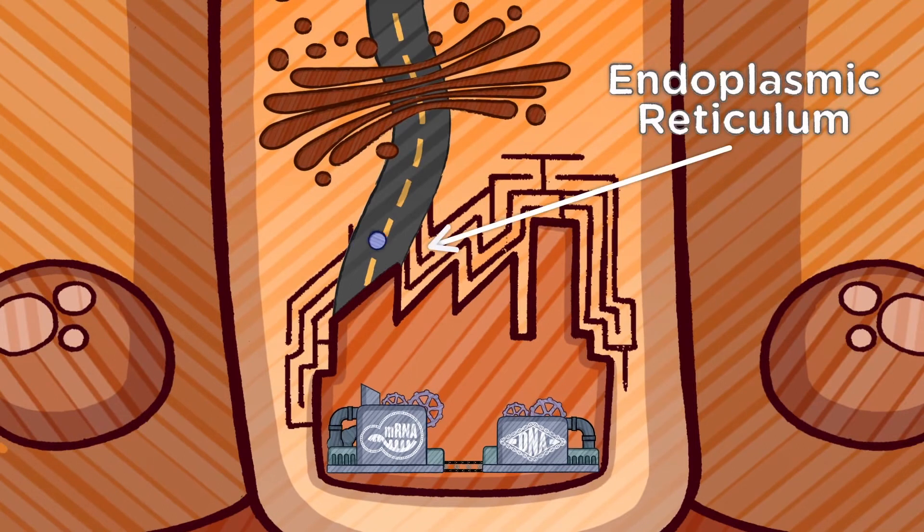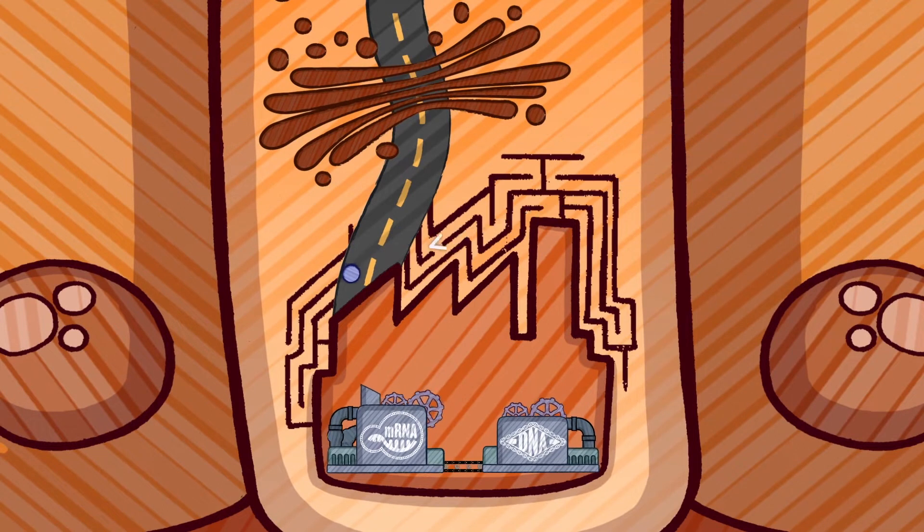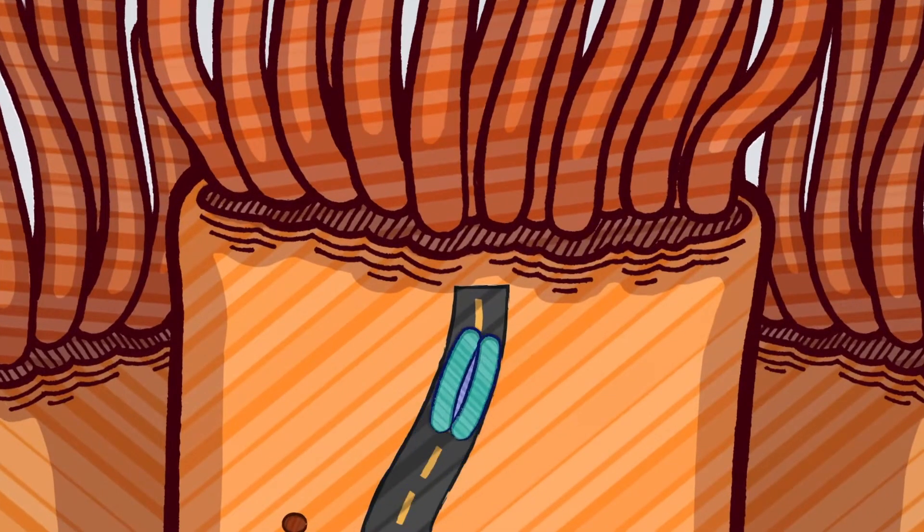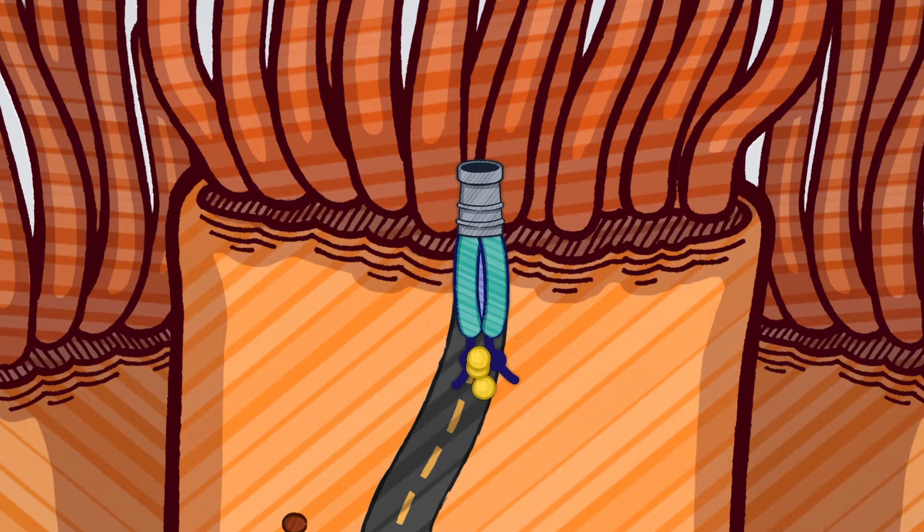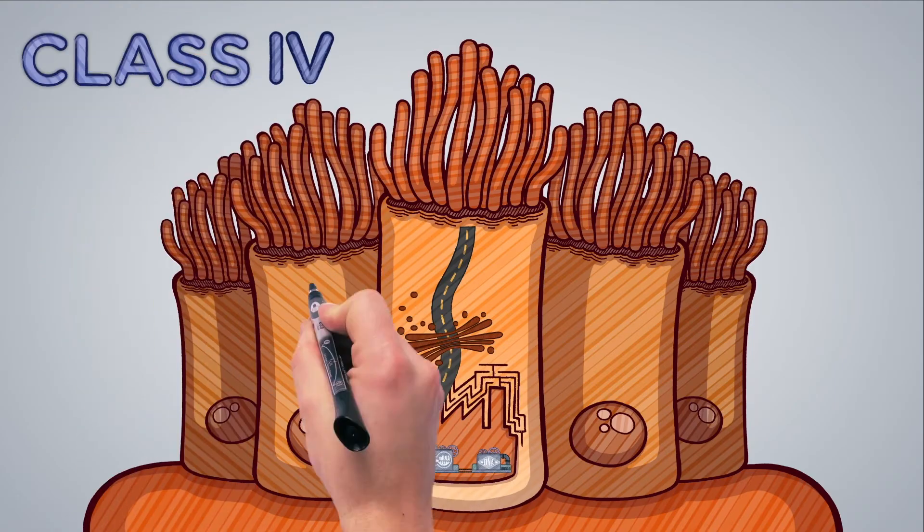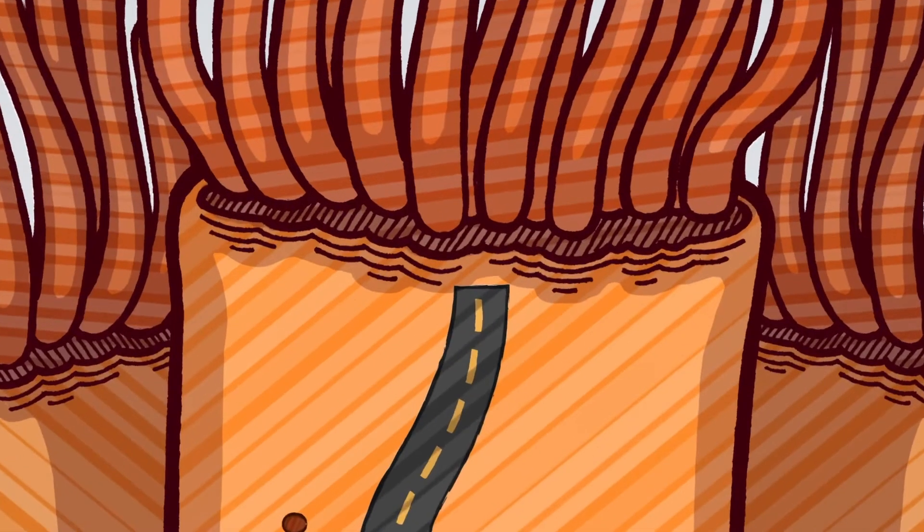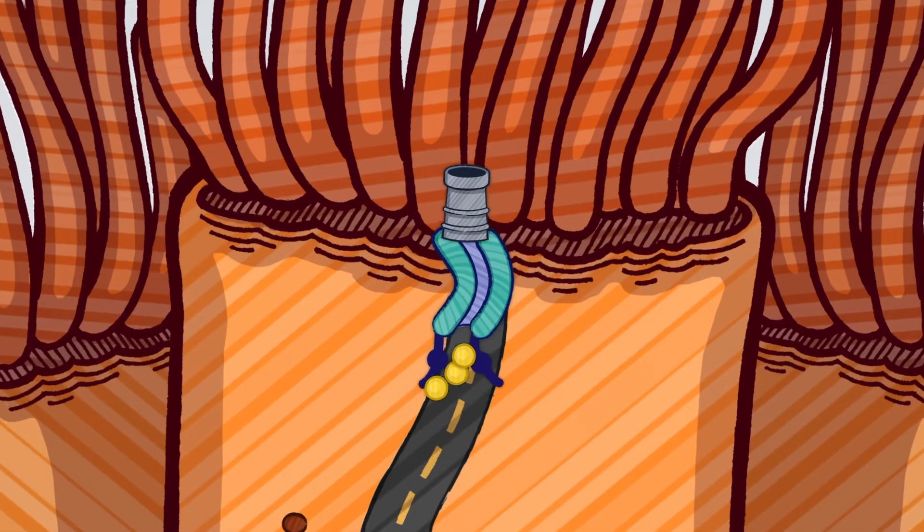The deformed CFTR gets trapped in the endoplasmic reticulum. In class three, CFTR arrives at the apical membrane, but its ion channel cannot open properly to transport chloride. In class four, CFTR arrives at the apical membrane, but its ion channel is misshaped.